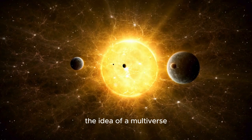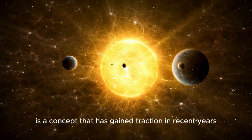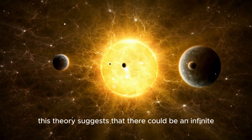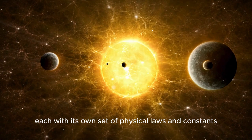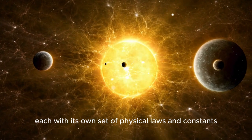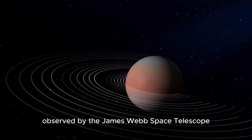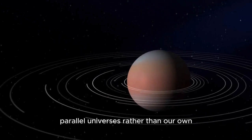The idea of a multiverse, where multiple universes exist alongside our own, is a concept that has gained traction in recent years. This theory suggests that there could be an infinite number of universes, each with its own set of physical laws and constants. If this is true, then the galaxies observed by the James Webb Space Telescope could have originated in one of these parallel universes, rather than our own.